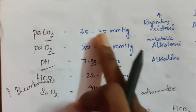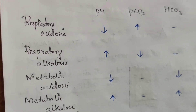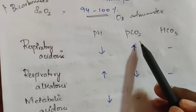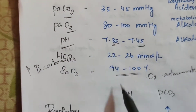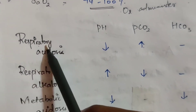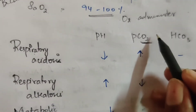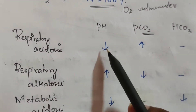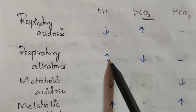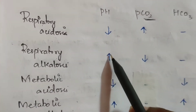Based on these values, we can identify: respiratory acidosis, respiratory alkalosis, metabolic acidosis, and metabolic alkalosis. In case pH is low and PCO2 is above 45 — that is, pH below 7.35 with PCO2 above 45 — that indicates respiratory acidosis, as CO2 is related to respiration. If pH is low and PCO2 is low, that indicates alkalosis.